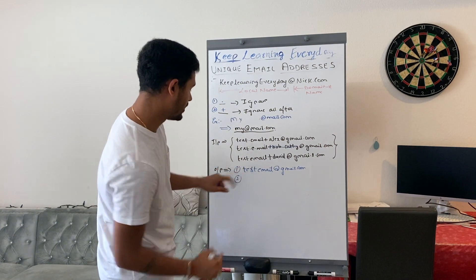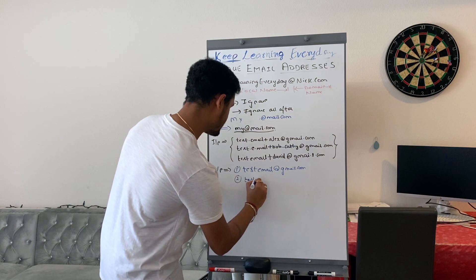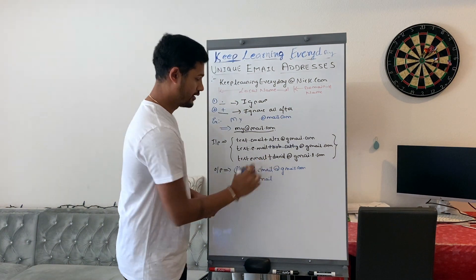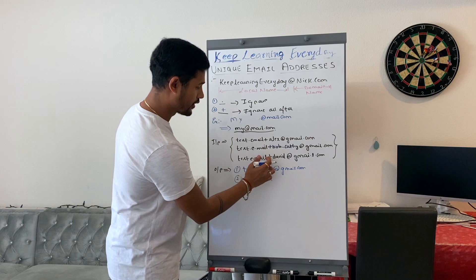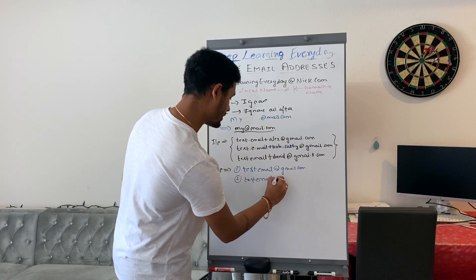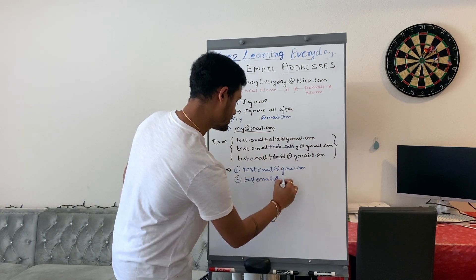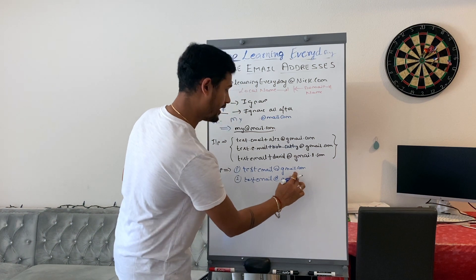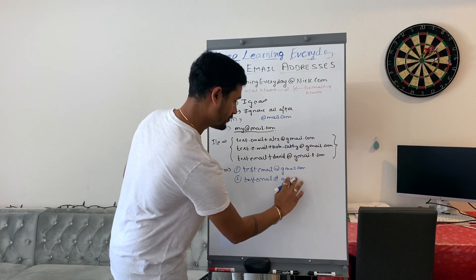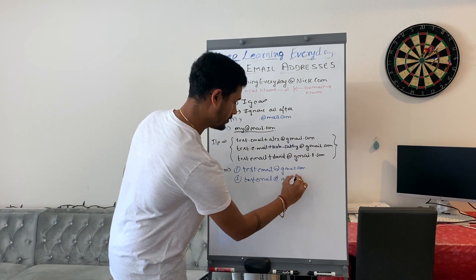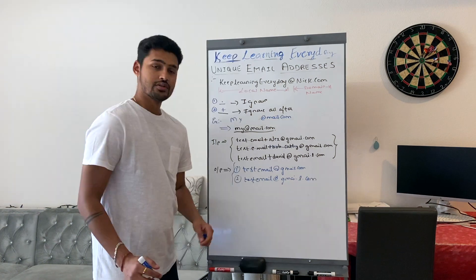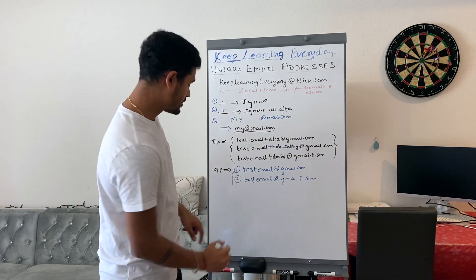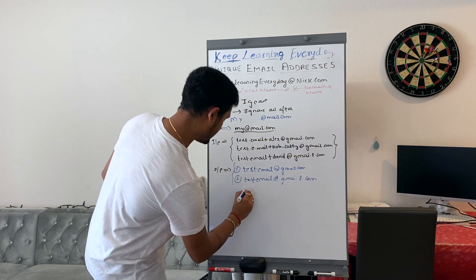Taking the third email, it becomes testemail and you ignore everything after the plus, so it becomes testemail@gmail.com. At the end, if you see we have two unique email addresses, so we reply back with two.